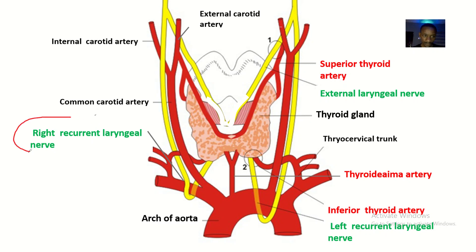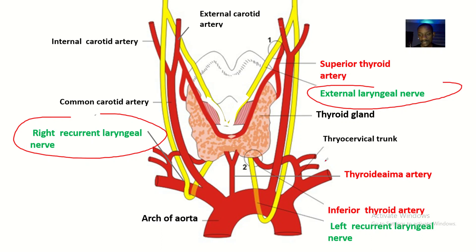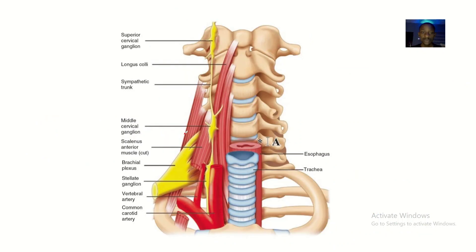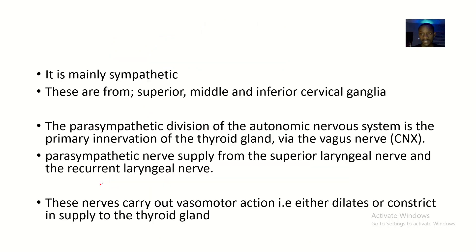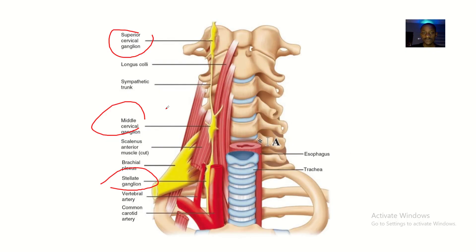You can see the recurrent laryngeal nerve and external laryngeal nerve — all of them are basically branches of the vagus nerve. There's another supply too, which is from the superior cervical, middle cervical, and inferior cervical ganglia, also known as the stellate ganglia. So the nerve supply to the entire gland is divided into sympathetic and parasympathetic, and it is mainly sympathetic. The sympathetic supply is from the superior cervical ganglia, middle cervical ganglia, and the inferior cervical ganglia, also known as the stellate ganglia.